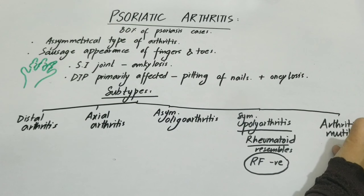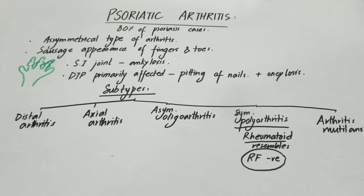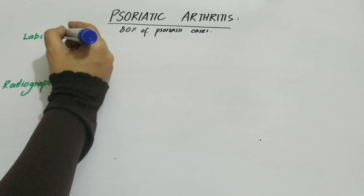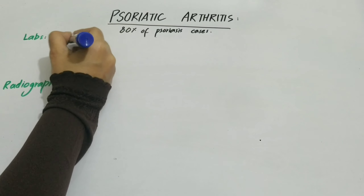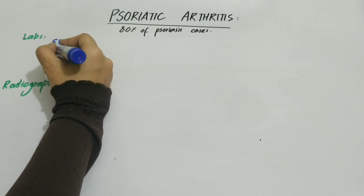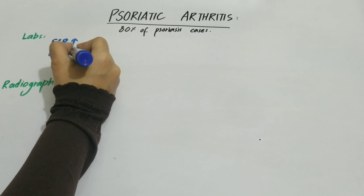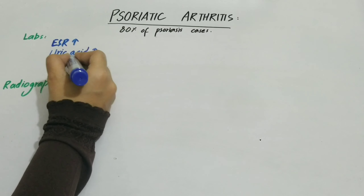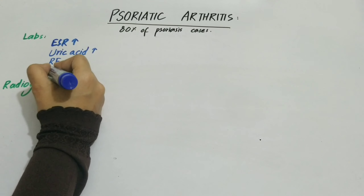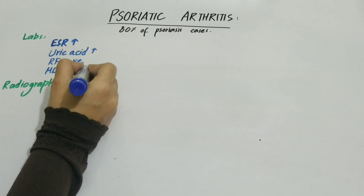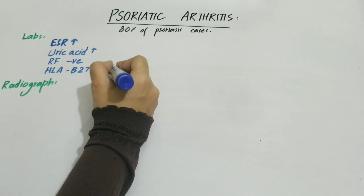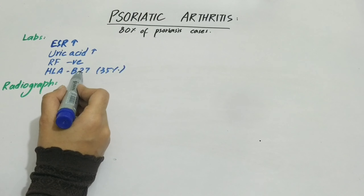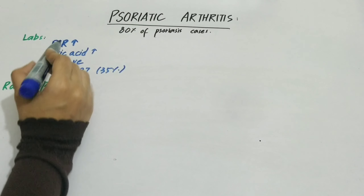The last type is arthritis mutilans. What happens here is that fingers and toes are affected with pencil-and-cup deformity. For labs, ESR and CRP will be raised in any inflammatory condition. Uric acid deposition is also notable. RF is negative. HLA-B27 is genetically associated and present in approximately 35% of cases.